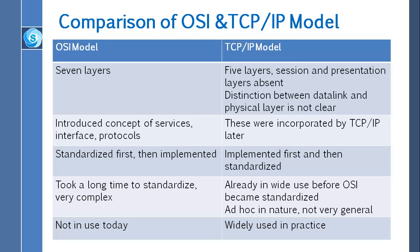In the TCP/IP model, these concepts were incorporated later. The OSI model was standardized first and then implemented, whereas the TCP/IP model was implemented first and then standardized later. It took a long time to standardize the OSI model, and it is also very complex in nature. The TCP/IP model was already in wide use before OSI became standardized, though TCP/IP is considered ad hoc in nature and not very general. Today, the OSI model is no longer in use, but the TCP/IP model is widely used in practice. The TCP/IP protocols are the standards around which the internet has been developed, giving the TCP/IP model credibility through its protocols. In contrast, networks are not usually built on the OSI model, even though the OSI model is used as a guide.